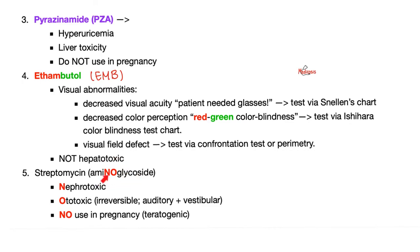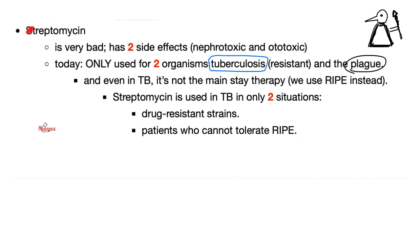Streptomycin, the famous aminoglycoside, is nephrotoxic and ototoxic — do not use in pregnancy. It is used today against two famous organisms: tuberculosis and Yersinia pestis, the plague. Even in tuberculosis, it is not used in every case — only in drug-resistant tuberculosis strains and in patients who cannot tolerate rifampin, isoniazid, pyrazinamide, or ethambutol.